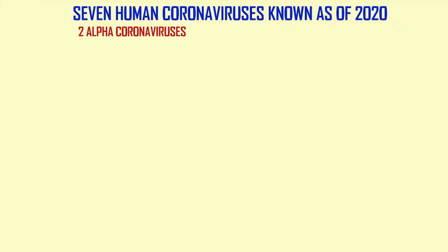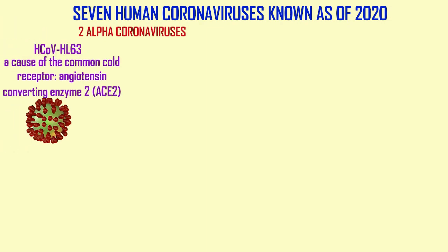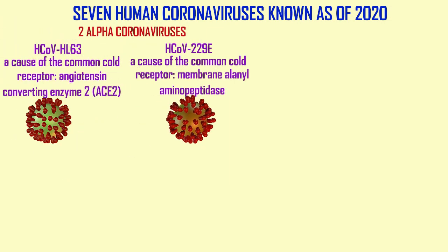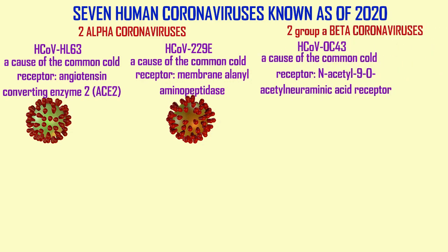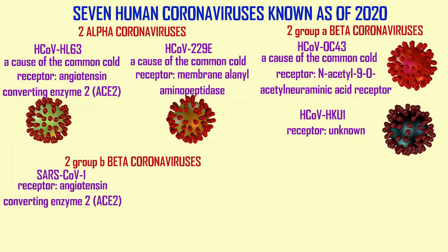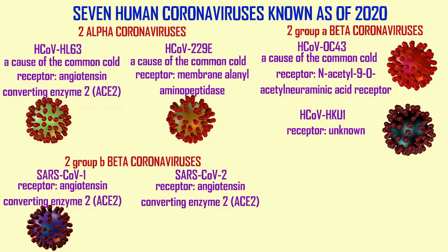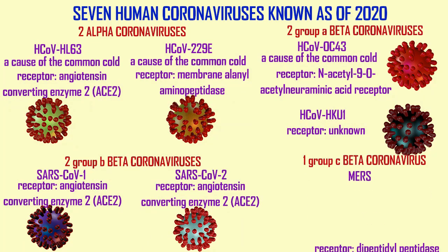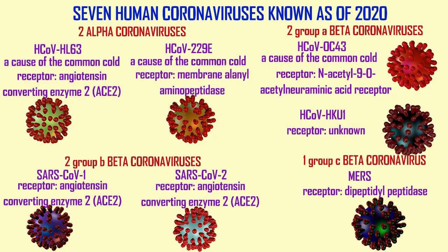So all coronaviruses have these four proteins as structural proteins in the virus itself. In the viral genome they are encoded in this order — S, E, M, N — in all members of the family.